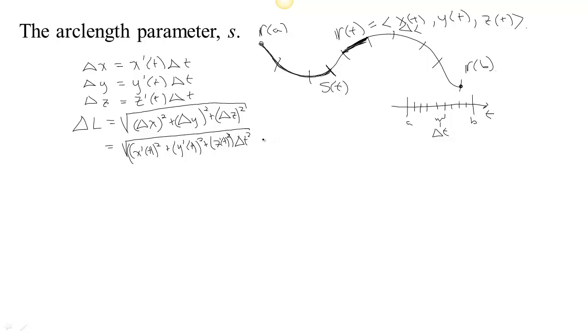Now the root of a product is the product of the roots, so we basically have that our little change in l is x prime squared plus y prime squared plus z prime squared times the square root of delta t squared, which would just be delta t. So that's a little bit of length of the curve. And what we want to do is to add up from the first little bit to the last little bit, the lengths traveled all along there.